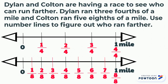Now we are ready to plot our points on the number line. Since Dylan ran three-fourths of a mile, I'm going to place a blue dot on the three-fourths mark.